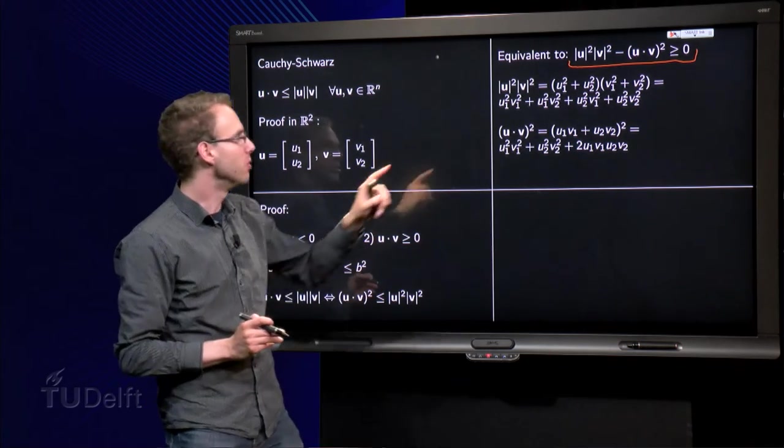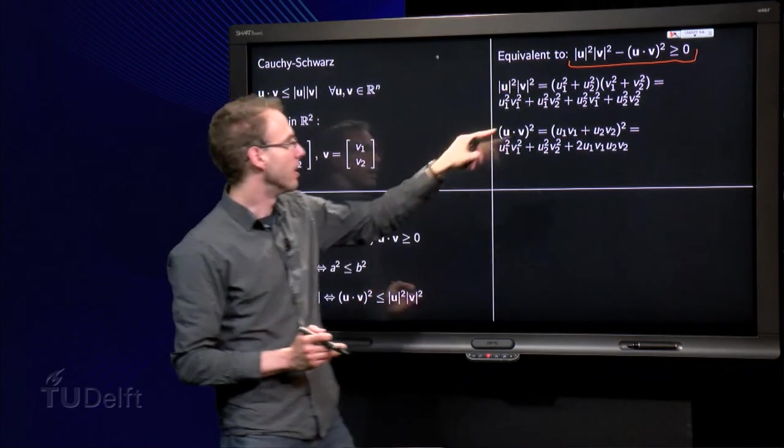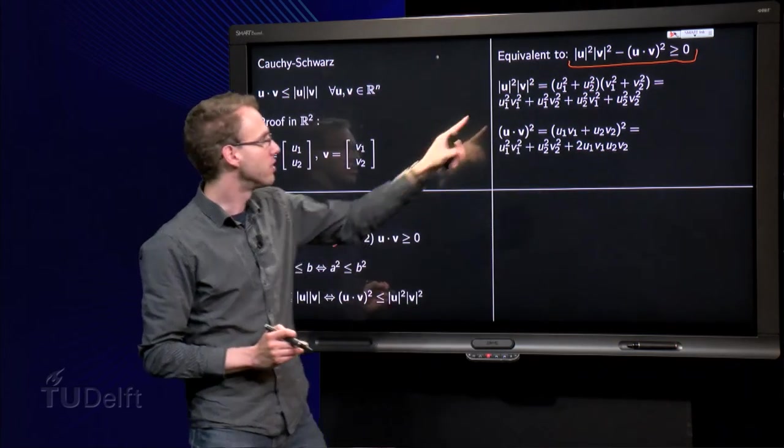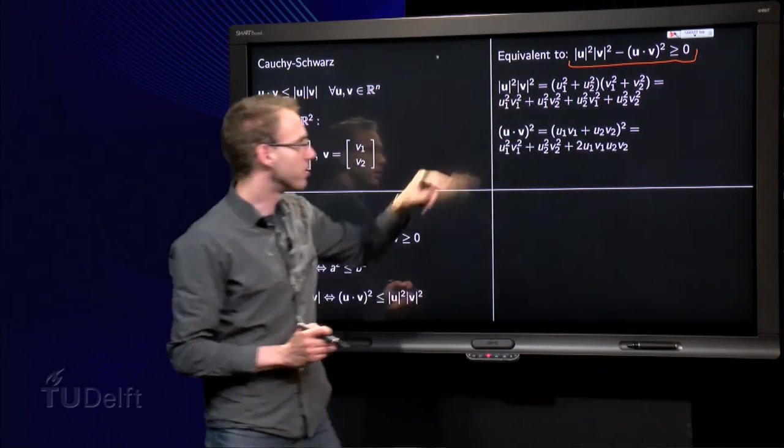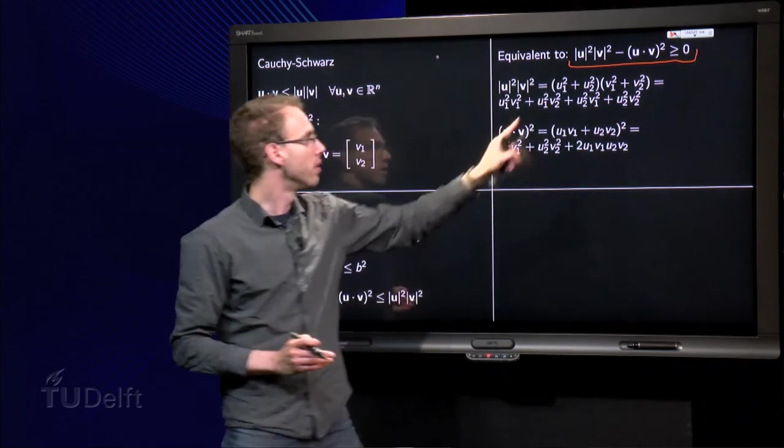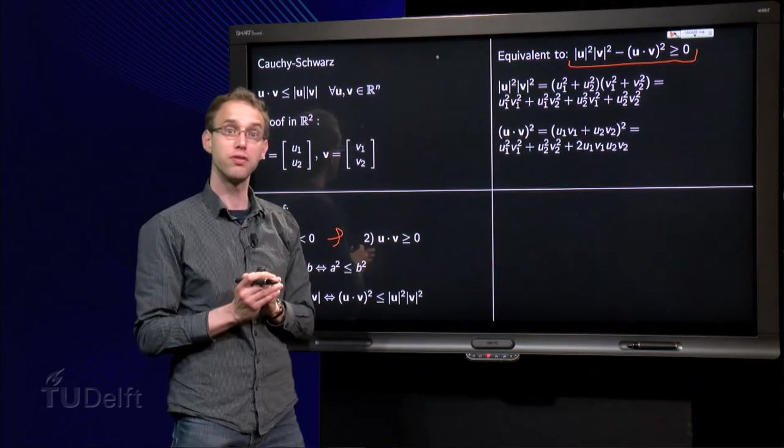Now, what are we going to do? First we compute the length of u squared times the length of v squared. And then we work out the brackets. u₁²v₁², u₁²v₂², u₂²v₁², and u₂²v₂². Okay, that is the first one.